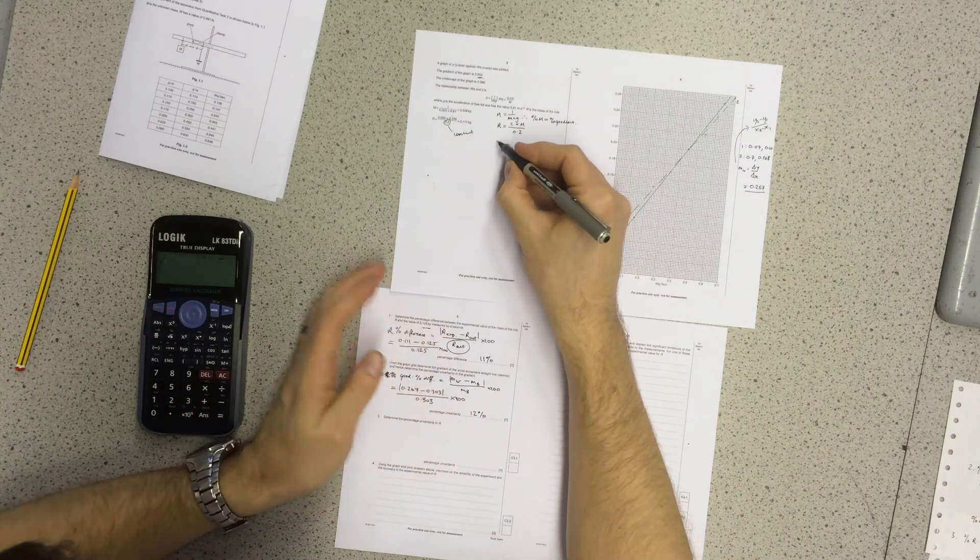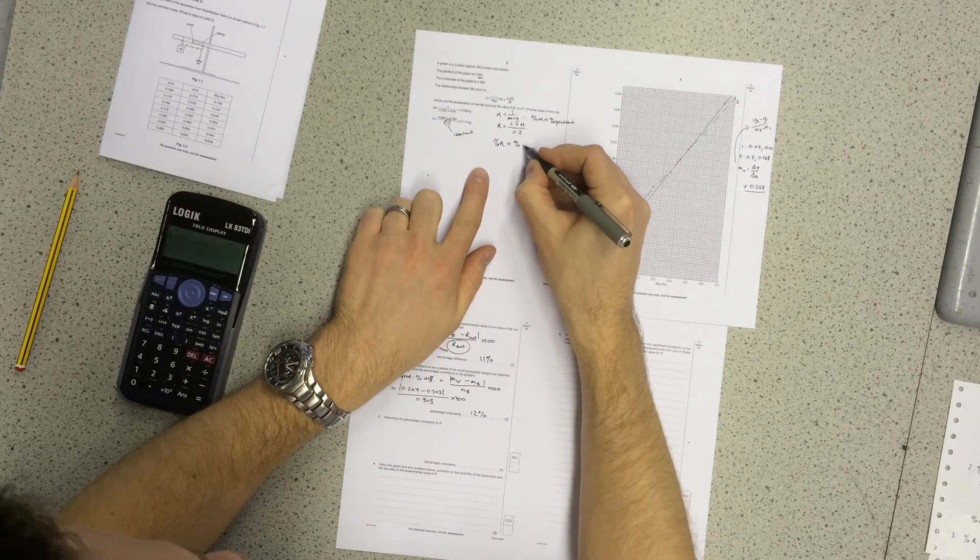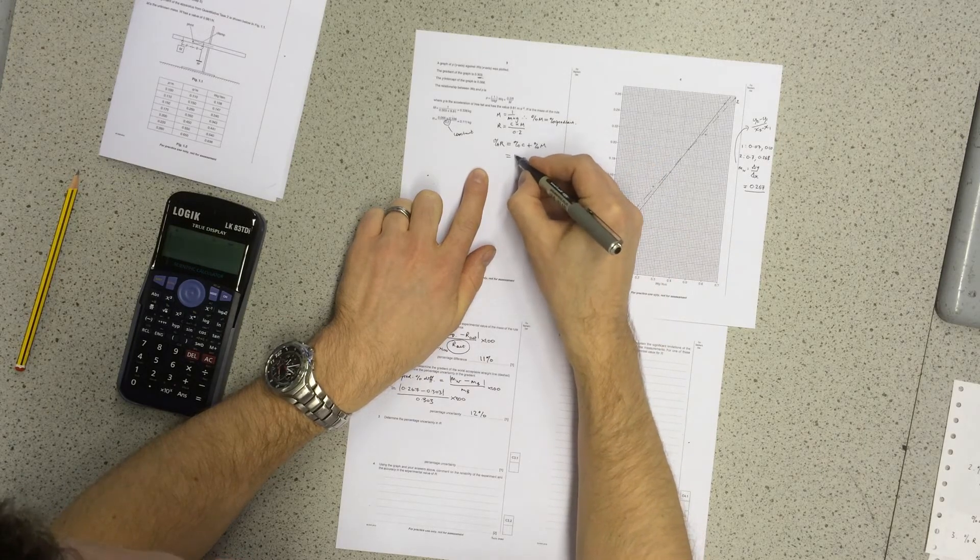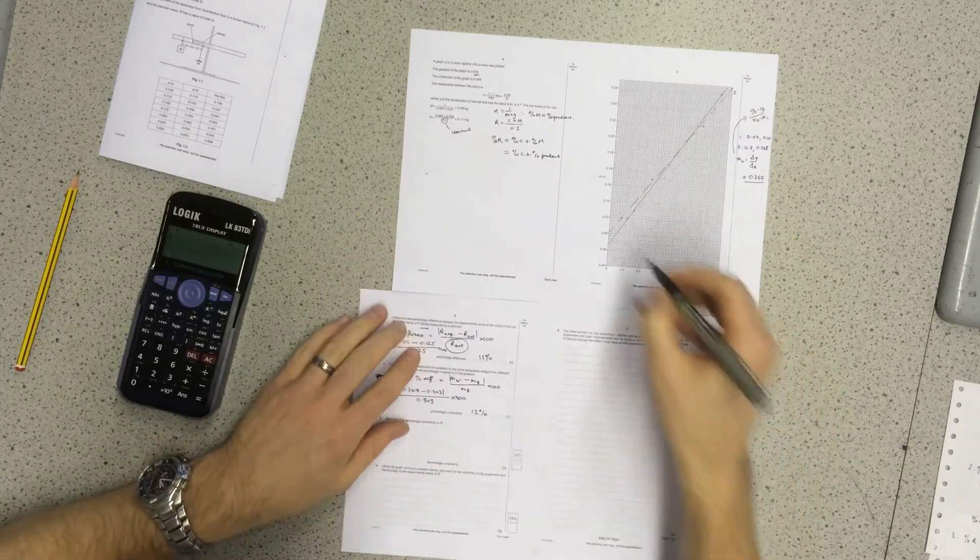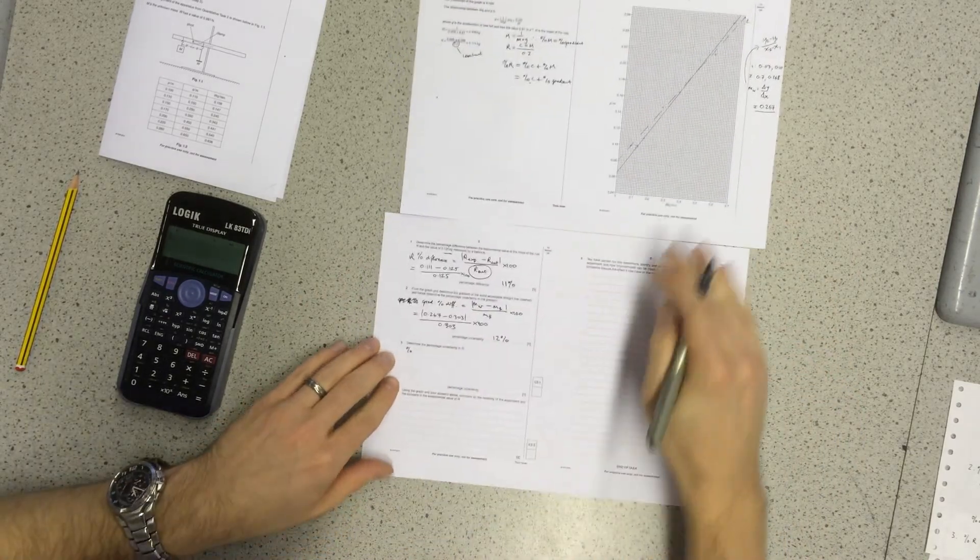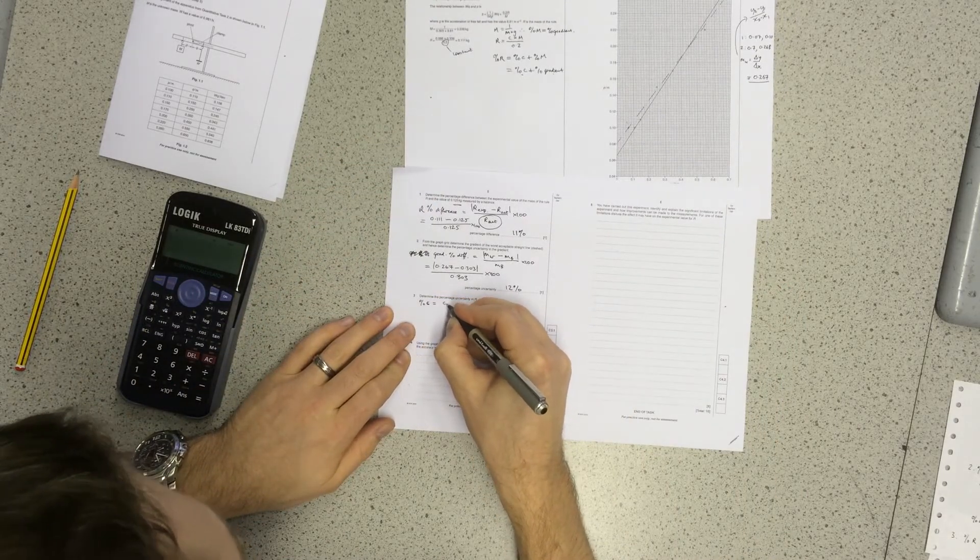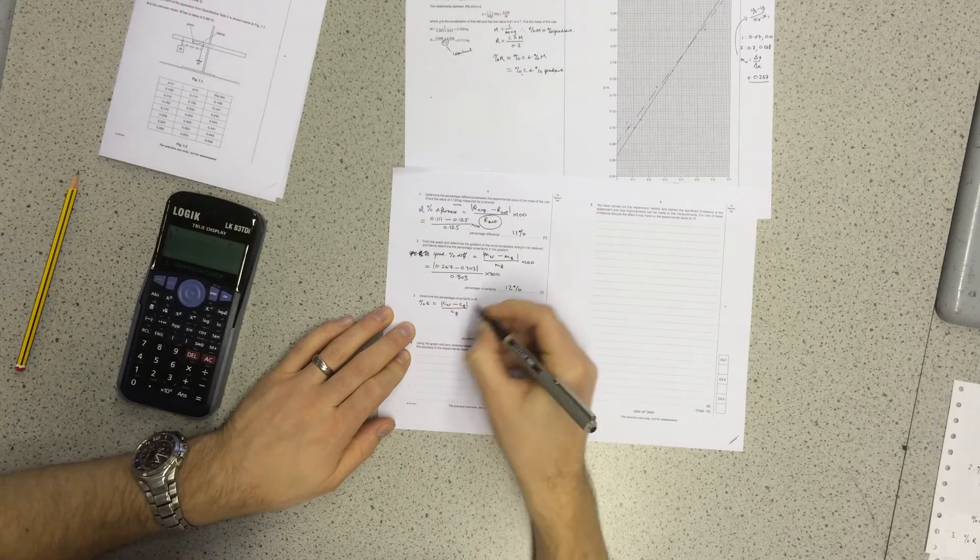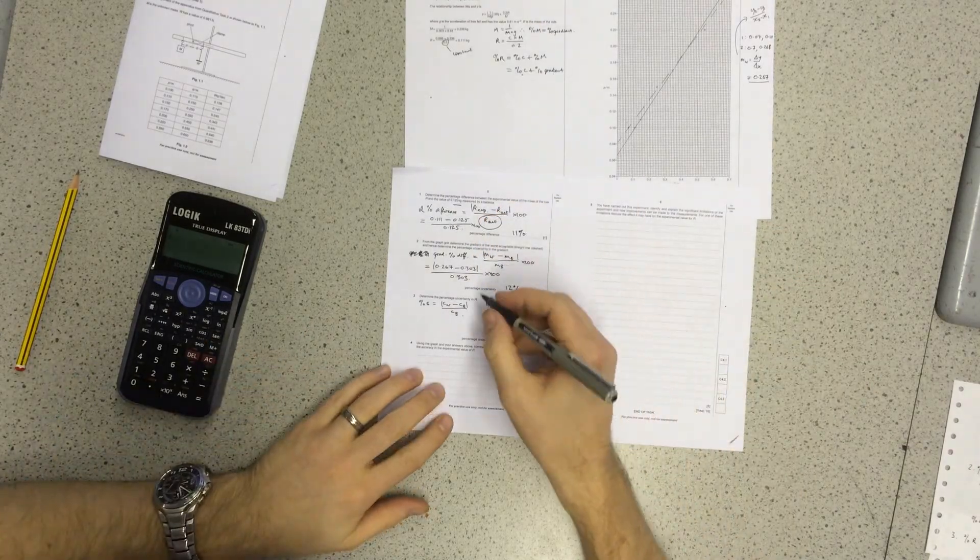Therefore, using uncertainty rules, the percentage uncertainty in r is equal to the percentage uncertainty in c plus the percentage uncertainty in m, which is equal to the percentage uncertainty of the gradient. I know this value. I don't know the percentage uncertainty in c, so it's a percentage difference calculation. I'll write that down here. Percentage uncertainty in c is equal to c worst minus c best. Again, dividing by the best value. So, divided by the best value here, or the expected value. Expected or best correlate.